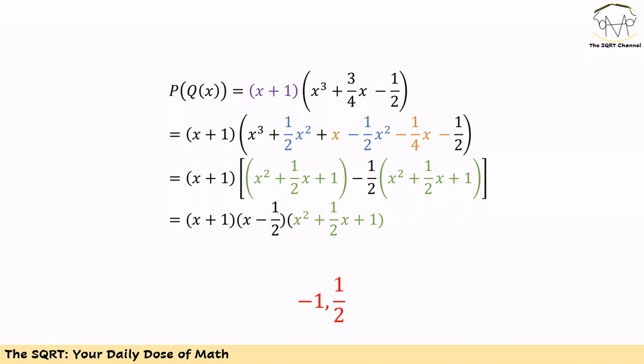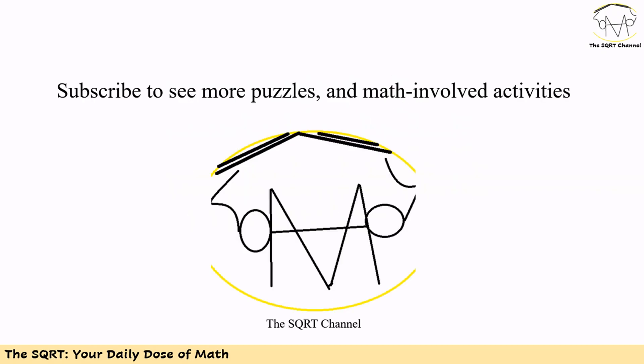So we now have x = -1 and x = 1/2 as two roots of the polynomial. The next step is checking whether the quadratic factor x² + (1/2)x + 1 has any real roots — it does not. Therefore, -1 and 1/2 are the only two real roots of P(Q(x)), and these are our final answers. Thanks for watching! If you'd like to see more math puzzles and activities, please subscribe to the channel.